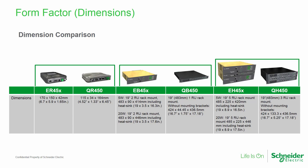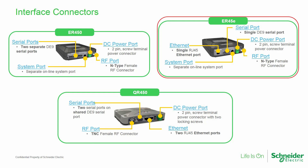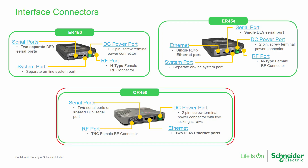The QH450 requires only 3 rack units rather than the 5 rack units of the EH450. The ER450 has 2 separate DE9 serial ports, an RJ45 system port for programming and diagnostics, a 2-pin power connector, and an N-type antenna connector. The ER45E is similar but has only 1 DE9 serial port while adding an RJ45 Ethernet port. The QR450 has several differences: the RF port is a TNC type, 2 serial ports are available on a single DE9 connector, there are 2 RJ45 LAN ports, and the power connector includes 2 integral locking screws.